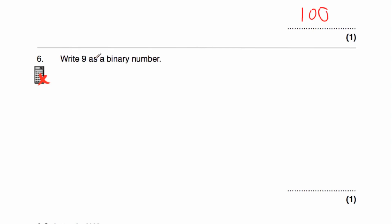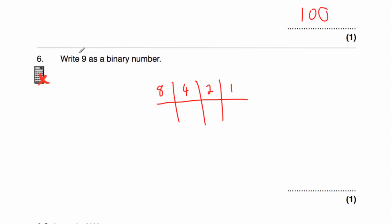Question six says, write the number 9 as a binary number. Start off with our columns: 1, 2, 4, 8. Multiply by 2 would be 16, which is too big, so we stop there. To get 9, working from left to right, we use an 8. We don't need any 4s — that would be 12. We don't need any 2s — that would be 10. But we need a 1. So 8 plus 1 equals 9, giving us the binary number 1001.